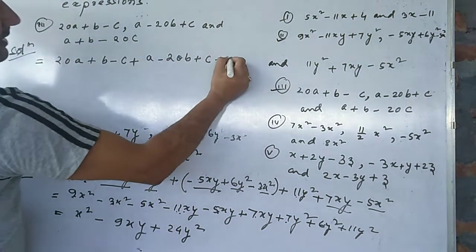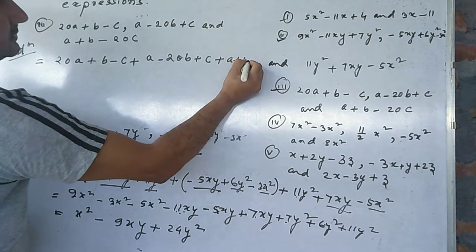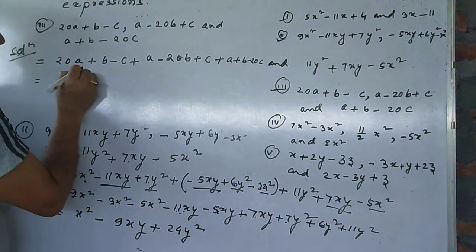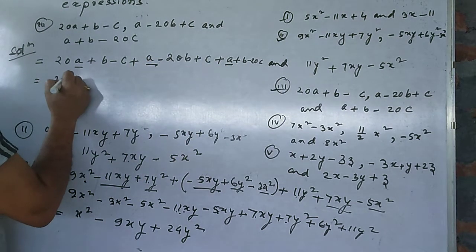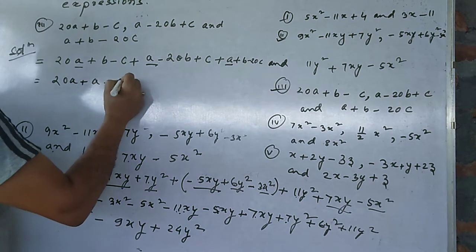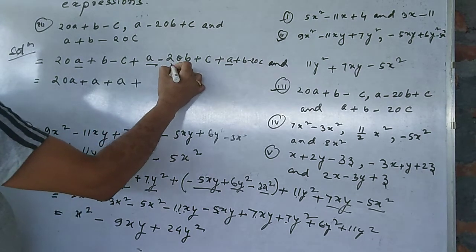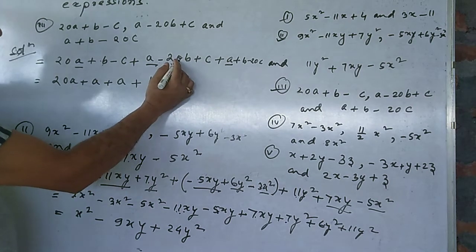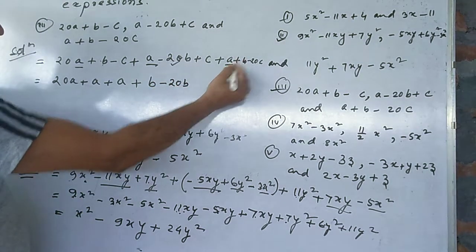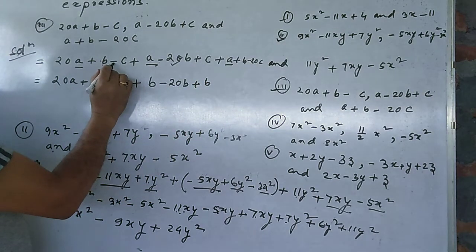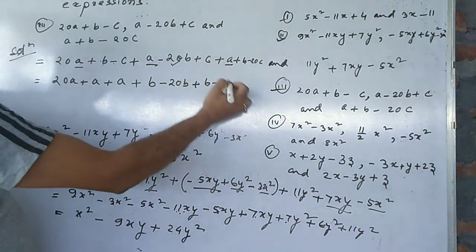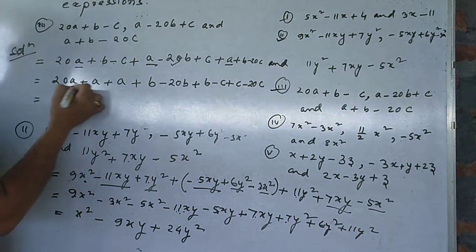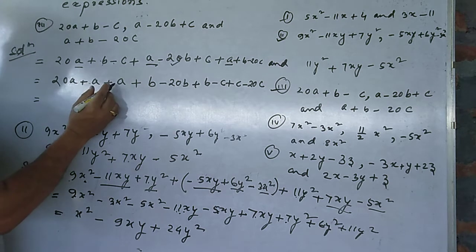a plus b minus 20c. Solution: 20a plus b minus c, plus a minus 20b plus c, plus a plus b minus 20c. Now arrange the like terms. Arrange a terms: 20a plus a plus a. Then b terms: plus b minus 20b plus b. Now c terms: minus c plus c and minus 20c.